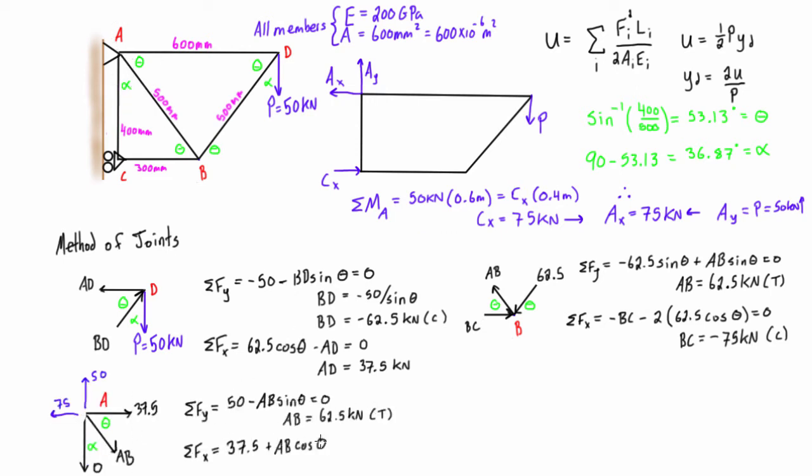We can also just check the joint at A here and just make sure that we get all the same answers. No matter which way we do it, we find that AB is 62.5 kilonewtons in tension, whether we're doing the sum of forces in Y or sum of forces in X, and that checks out with what we calculated.